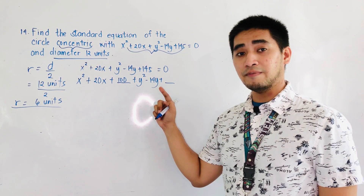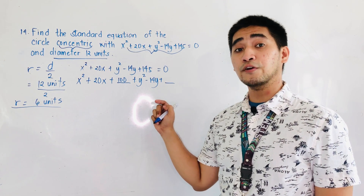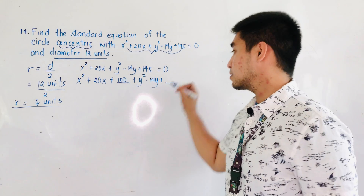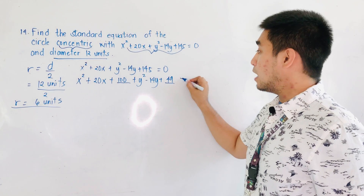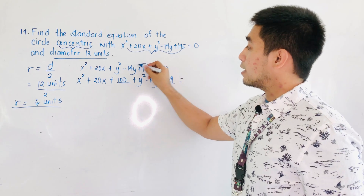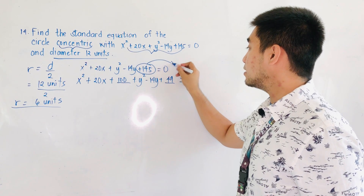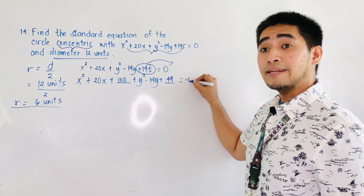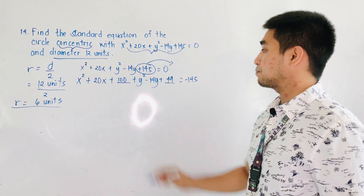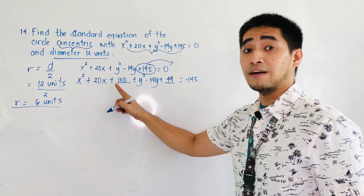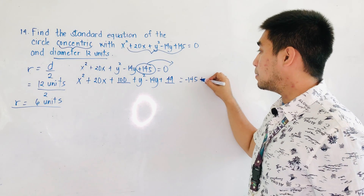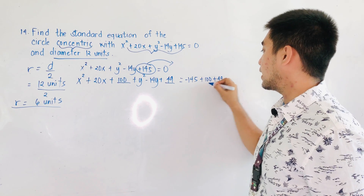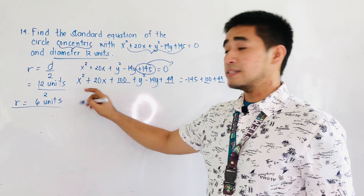100 plus y squared minus 14y plus blank. Let us complete the y term. This is negative 14 divided by 2, therefore that is negative 7 squared, which becomes 49. Now let us transpose the constant to the other side. If this is positive 145, this becomes negative 145. We will be adding all the values we completed: plus 100 and plus 49.